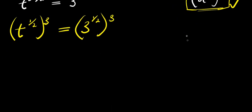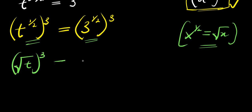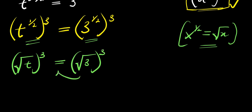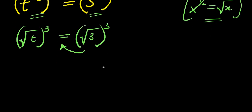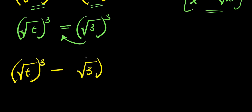Don't forget the fact that if you have x to the power of 1 over 2, this equals the square root of x. So we apply the same thing here and here. We have the square root of t, to the power of 3, equals the square root of 3, to the power of 3. We move this over and what we have will simply be: square root of t to the power of 3 minus square root of 3 to the power of 3 equals 0.